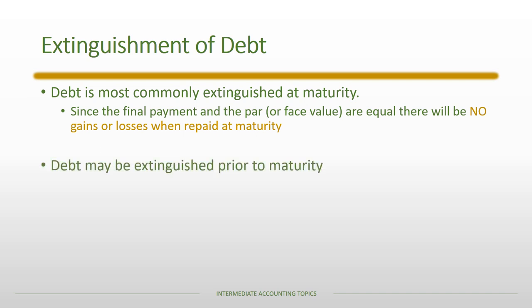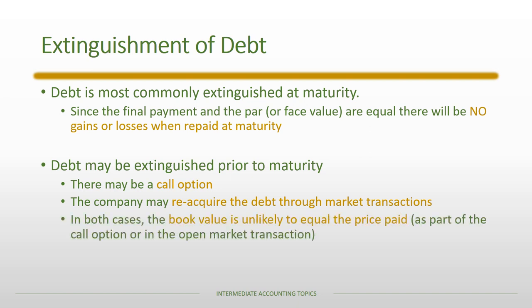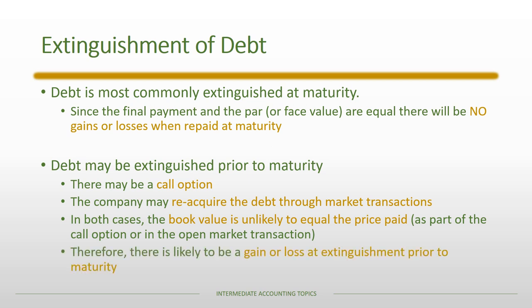However, sometimes debt can be extinguished prior to maturity. There could be several reasons it could be called early. One could be that there's a call option, meaning that the issuer of the debt has the option to extinguish the debt early at a predetermined price. Firms can also reacquire the debt through open market transactions. In those cases, the book value is not likely to equal the price paid, so there could be a gain or loss at extinguishment when it happens prior to maturity.